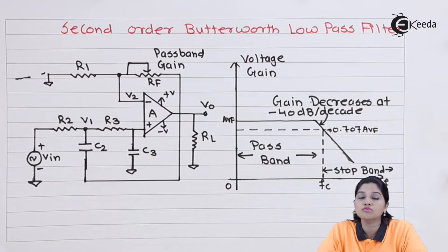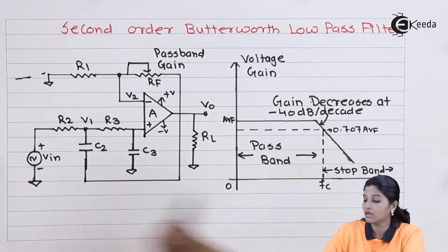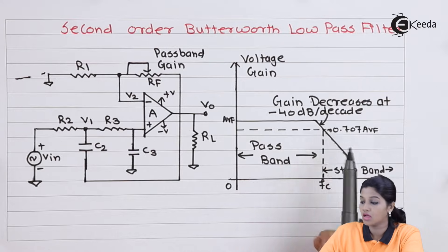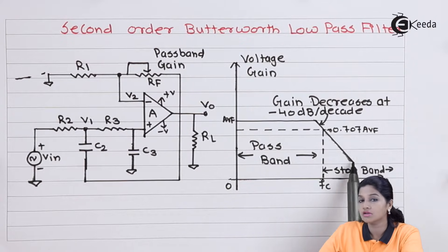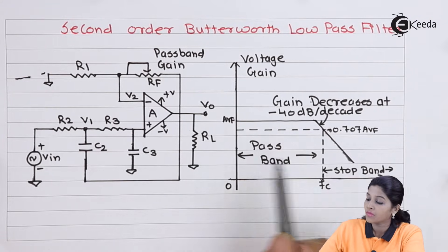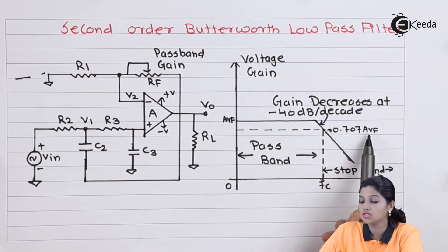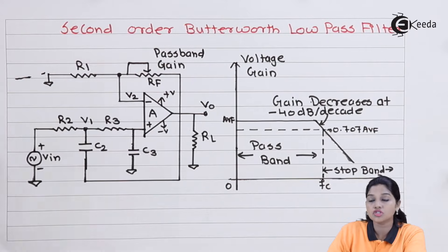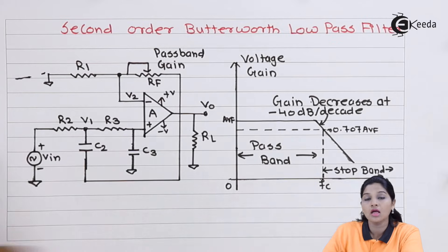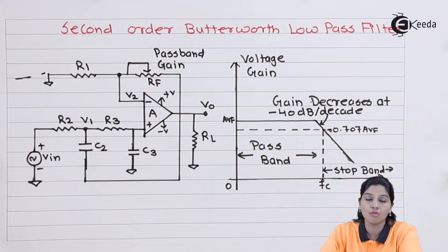Looking at the frequency response, till the frequency FC the gain of the filter remains constant. At F equals FC, the gain starts to reduce by a rate of minus 40 dB per decade, and there is a reduction in gain to 0.707 AVF. Frequencies between 0 and FC are passed by the filter — this is the pass band — and frequencies above FC are stopped by the filter, which is the stop band.